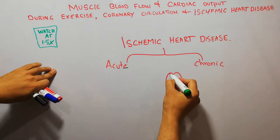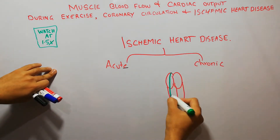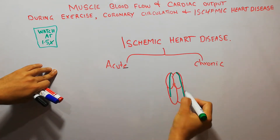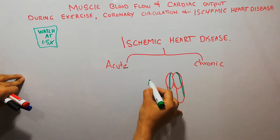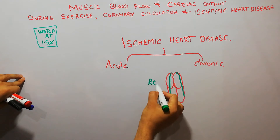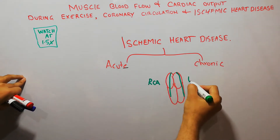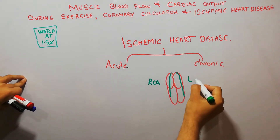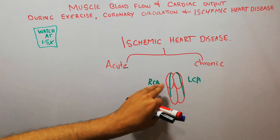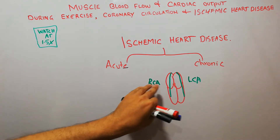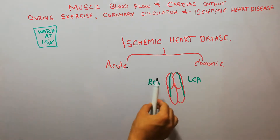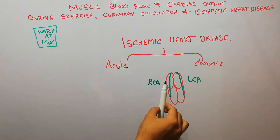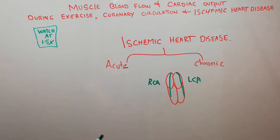The heart muscles are supplied with blood with the help of two main arteries: the RCA, the right coronary artery, and the LCA, the left coronary artery. The right coronary artery basically supplies most of the right side of the heart, and the left coronary artery mostly supplies the left side of the heart.